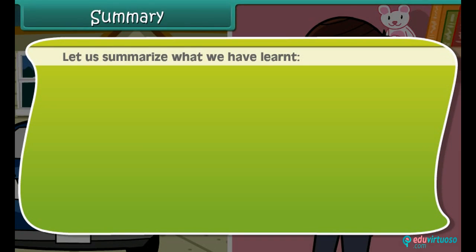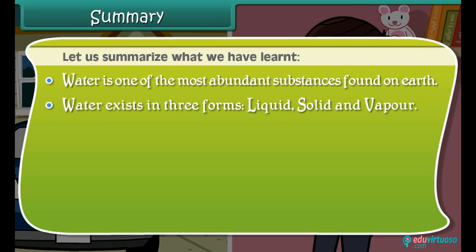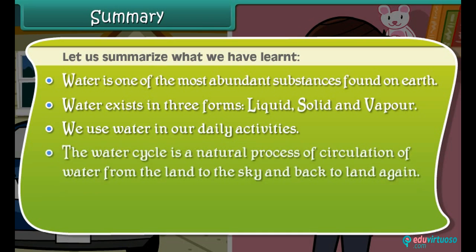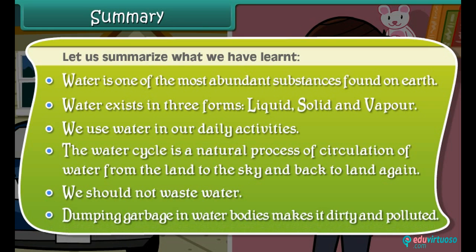Let's summarize what we have learned so far. Water is one of the most abundant substances found on earth. Water exists in three forms: liquid, solid, and vapor. We use water in our daily activities. The water cycle is a natural process of circulation of water from the land to the sky and back to land again. We should not waste water. Dumping garbage in water bodies makes it dirty and polluted.